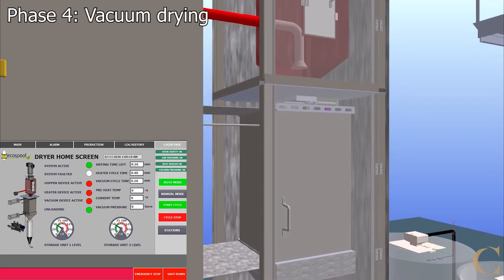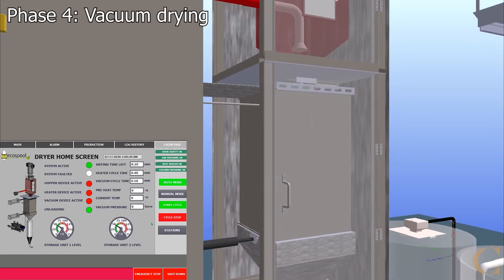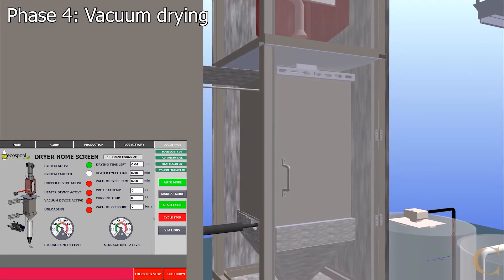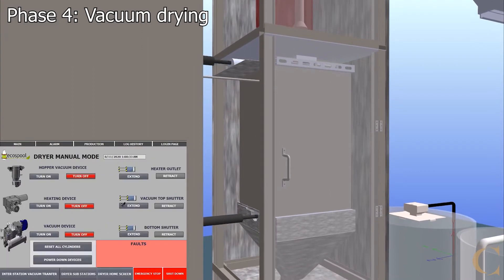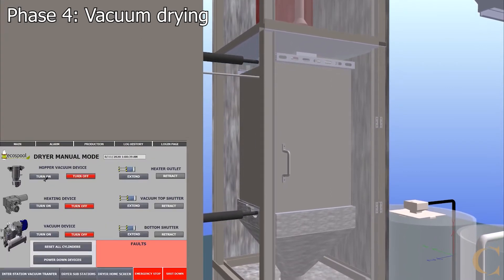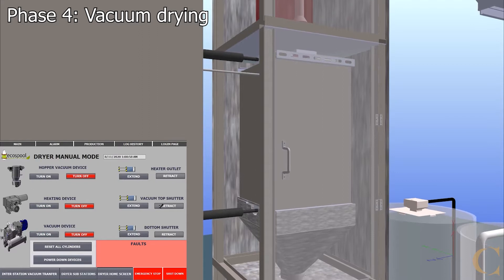In Phase 4, the particulates are enclosed inside the vacuum chamber using pressure-sealed sliding shutters. A powerful vacuum is applied to drop the pressure within the chamber to less than approximately 0.01 mmHg. This process will boil away any lingering moisture within the particulates.